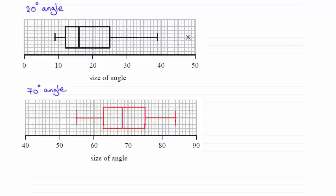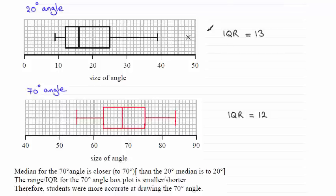And the reason for that is that we found out that the interquartile range for the 20 degree angle was 13, whereas the interquartile range for the 70 degree angle is 12 - a much smaller interquartile range. So that would be one good reason for saying that the 70 degree angle was drawn more accurately.